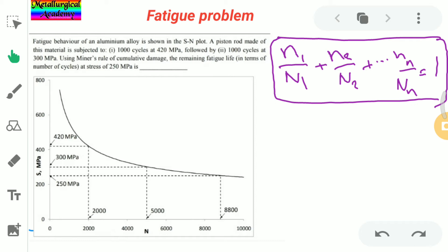We need to write it down plus 1000 cycles are observed at 300 MPa, which gives 5000 cycles. We need to find the remaining cycle at 250 MPa.